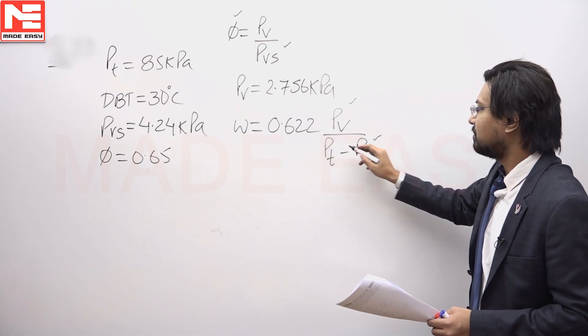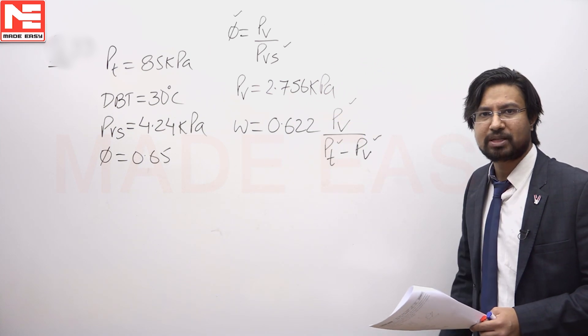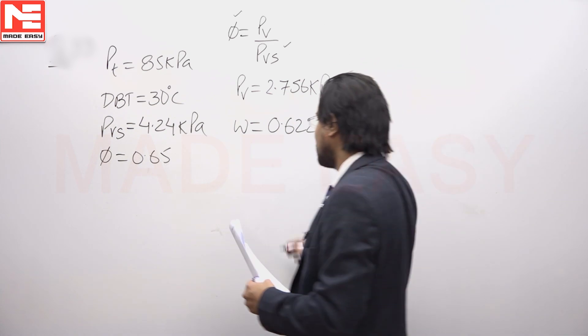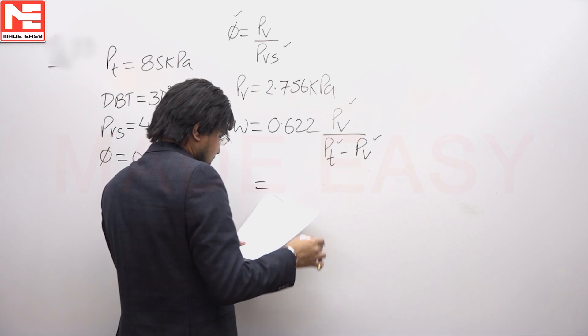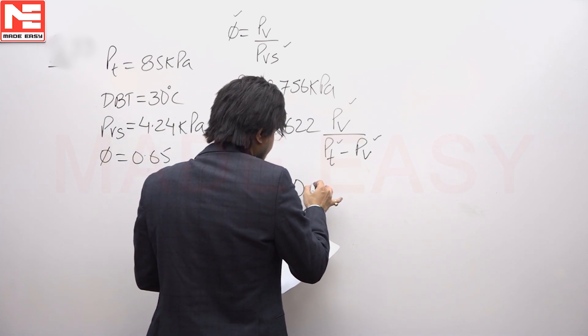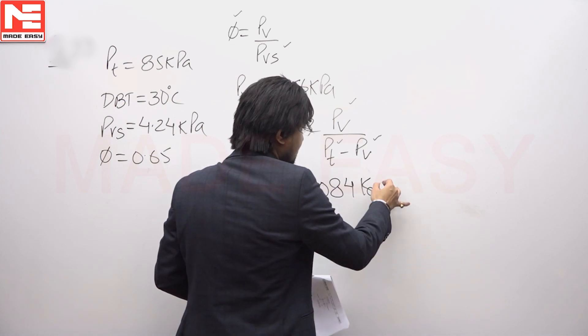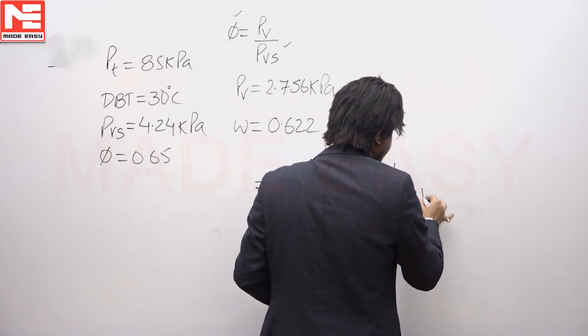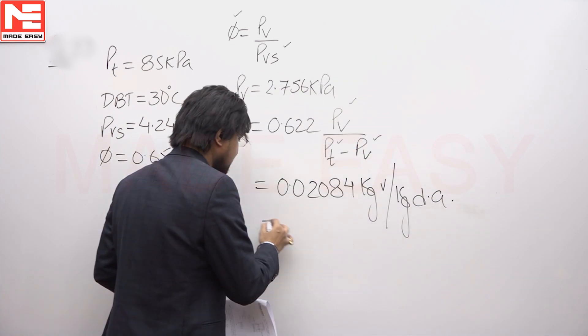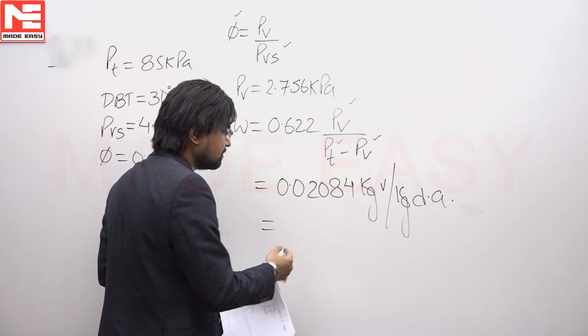Pv we have found out, Pt is given to us as 85 kilopascal. Using this data, I will find out the value of omega. Omega comes out to be 0.02084, but this will be in kilogram of vapor per kilogram of dry air, and I have to convert it into grams as asked in the problem.